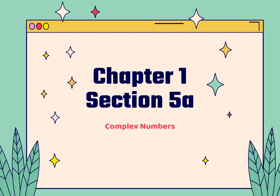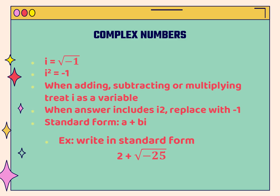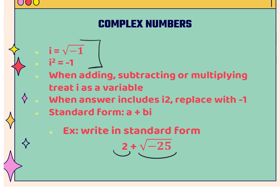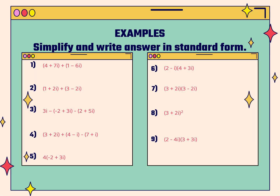Today we're going to continue on with day two of the complex numbers, section 1.5a. We already saw that you need to memorize that i is equal to the square root of negative one, and that i squared equals negative one. Standard form is always going to have the real part and then the imaginary part. When we square root a negative number, we square root the number part just like normal, but the negative one when we square root that becomes an i. Then we did some examples of multiplying, adding, and subtracting.